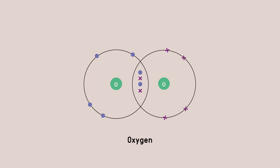Pairs of electrons may not be drawn evenly distributed over four sides anymore, but this doesn't matter, as long as there are still the right number of dots and crosses around the atoms and in the bond. Did you notice that one oxygen had crosses and the other dots, even though they are the same element?